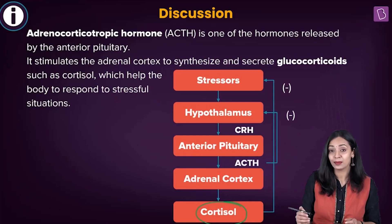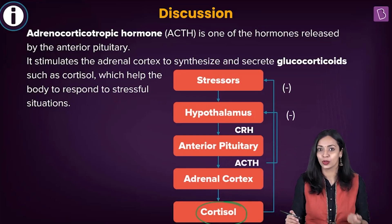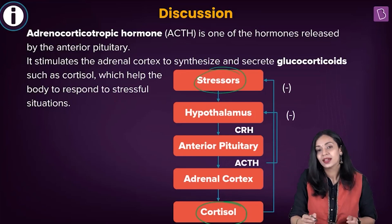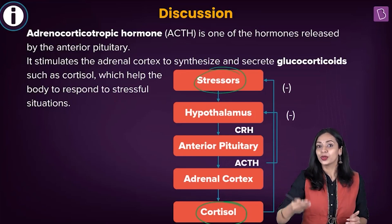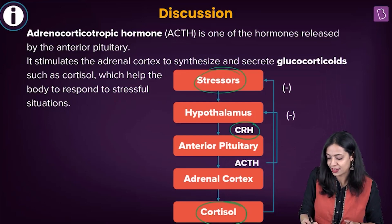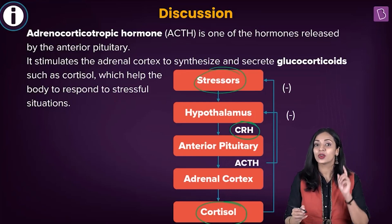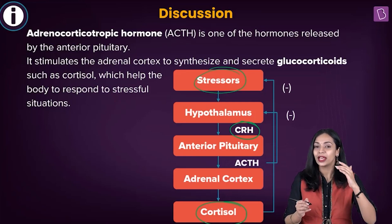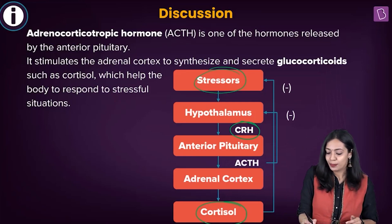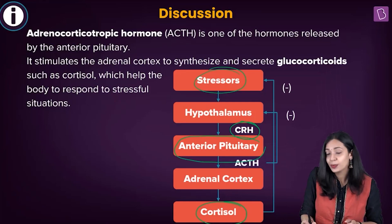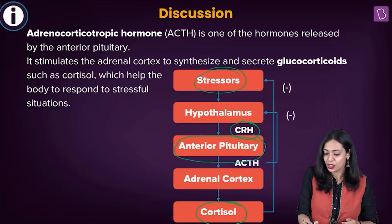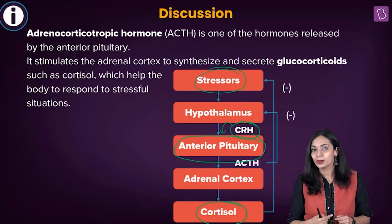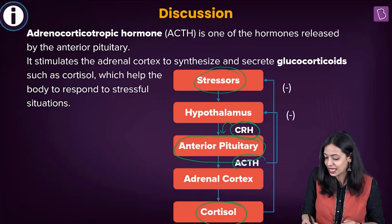Cortisol has a variety of other functions like metabolism of glucose. Whenever there is stress, the hypothalamus will produce a hormone known as CRH, which stands for corticotropin releasing hormone. When the hypothalamus secretes CRH into the bloodstream, it acts on the anterior pituitary specifically, stimulating it to produce a hormone known as ACTH.